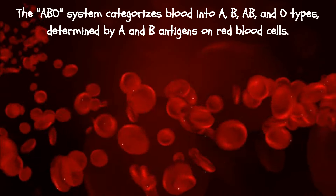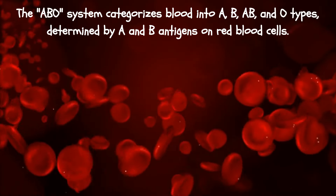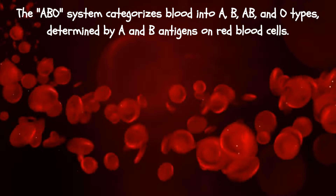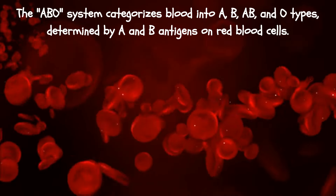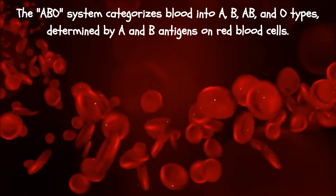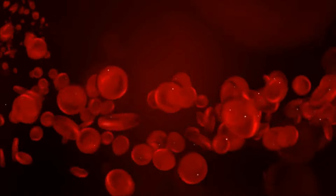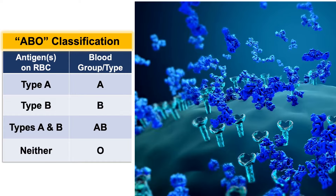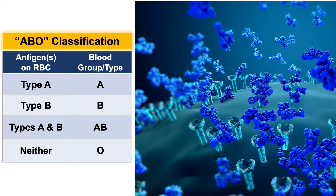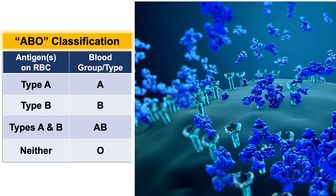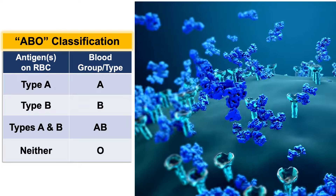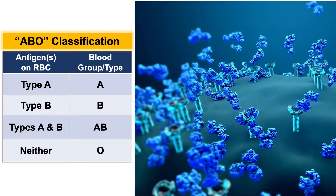The ABO system classifies blood into types A, B, AB, and O, based on A and B antigens present on the surface of red blood cells. Type A has A antigens, type B has B antigens, type AB has both, and type O has neither.